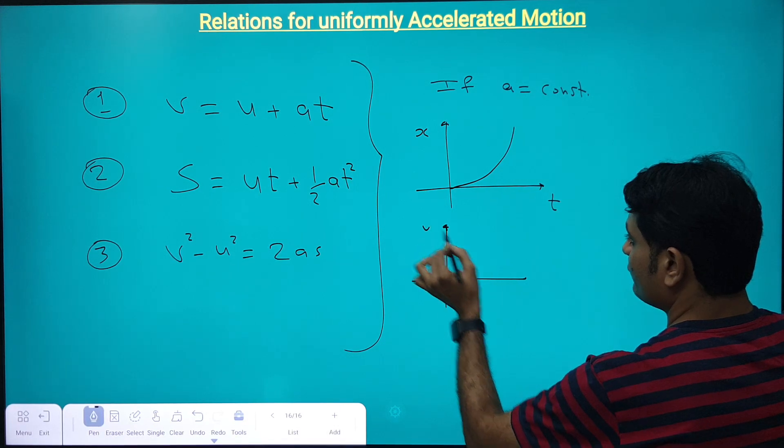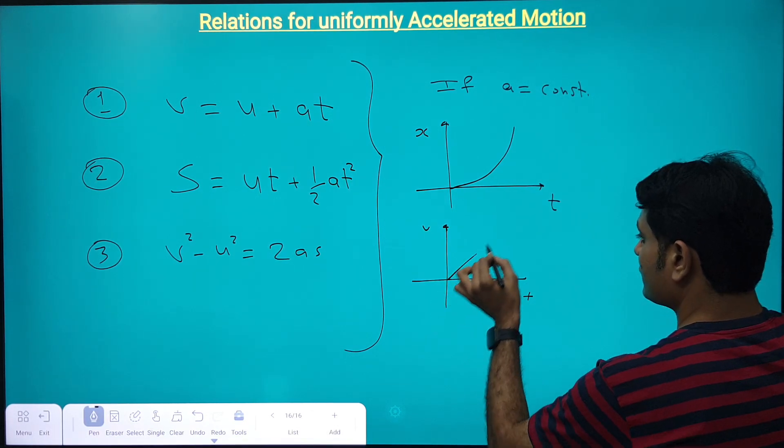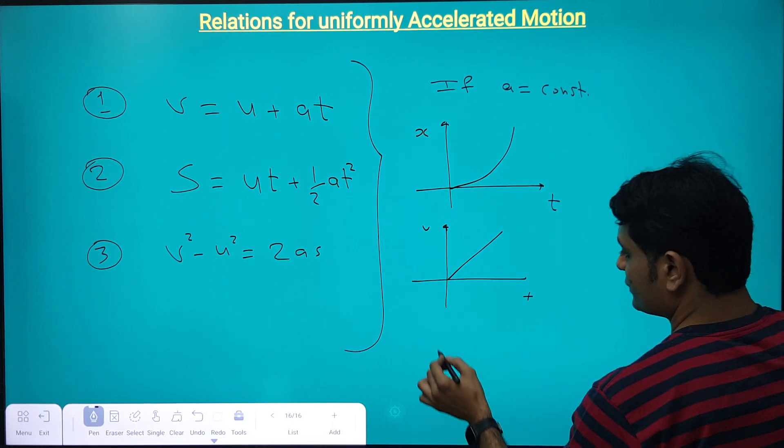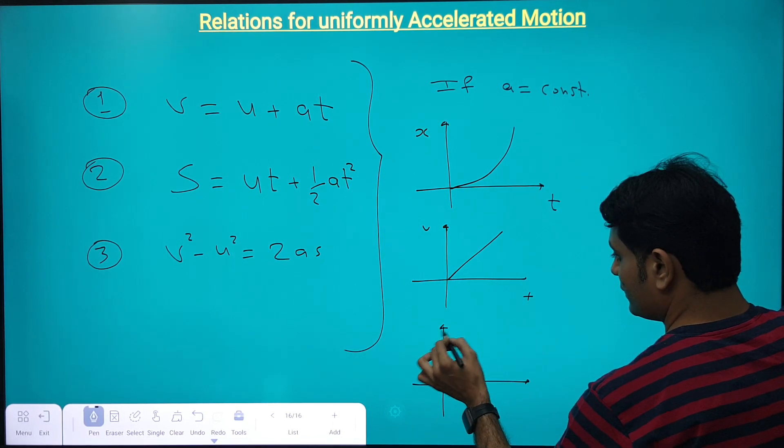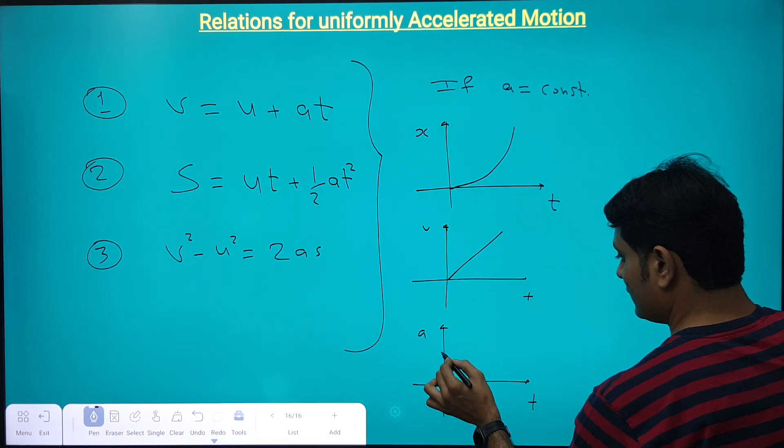The graph of V versus T for the same thing will be like this. So, this is the graph of V versus T when acceleration is constant and the graph of acceleration versus time will be like this.